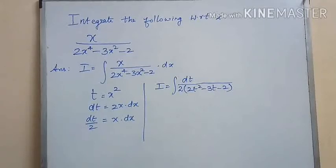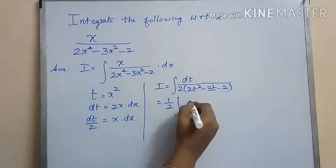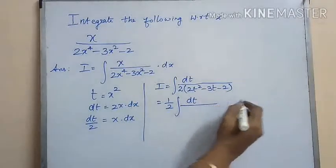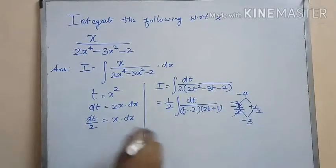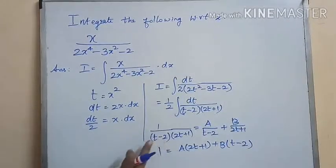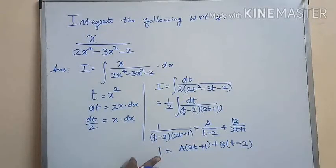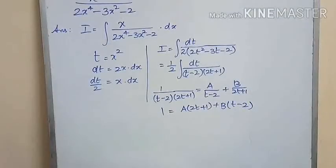Now let us factorize the quadratic expression in the denominator. We get one half times the integral of dt divided by t minus 2 into 2t plus 1. Let us split this fraction into partial fractions as A by t minus 2 plus B by 2t plus 1.